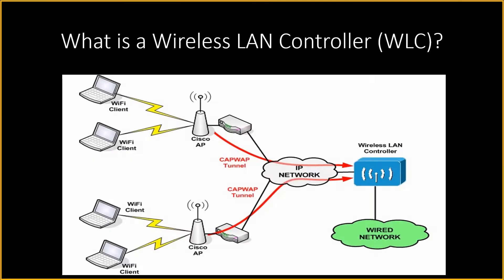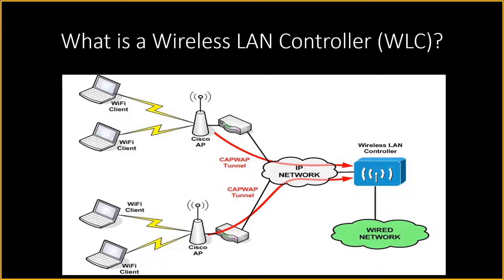So what is a wireless LAN controller? A wireless LAN controller is a centralized device in the network which is used in combination with the Lightweight Access Point Protocol to manage lightweight access points in large quantities by the network administrator or network operations center. These access points on the network are managed, operated, and configured independently.